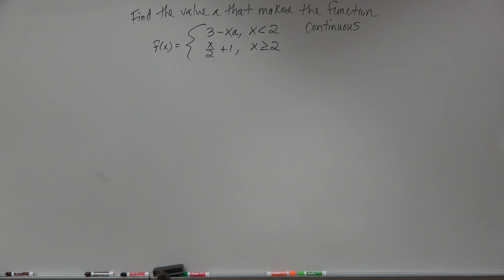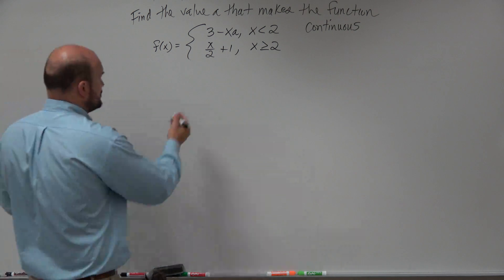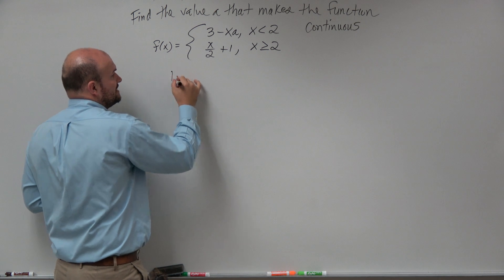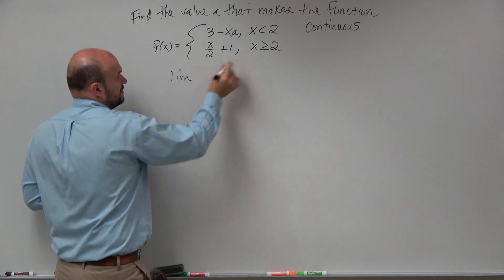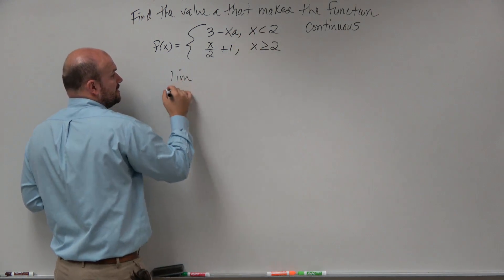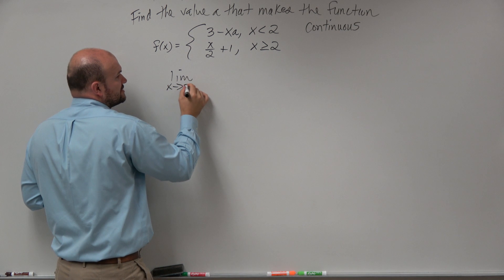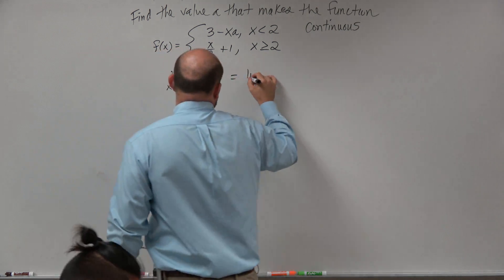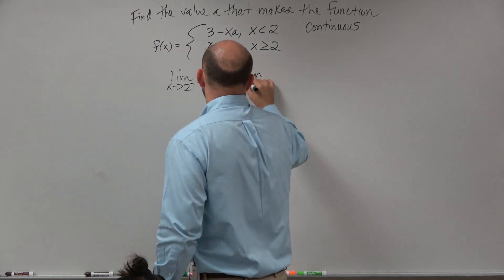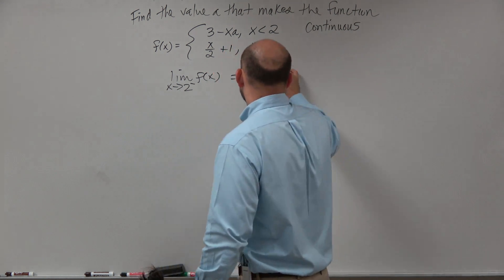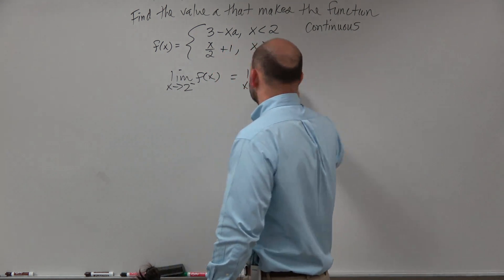The first thing that we did: we know that if a function is going to be continuous, we know that the left-hand limit — if it's going to be continuous, that means these are not going to meet up. So we're going to want the limit as x approaches 2 from the left of f of x to equal the limit as x approaches 2 from the right of f of x.